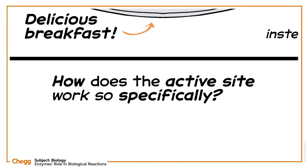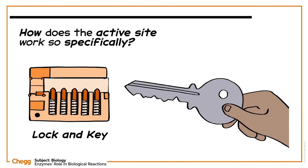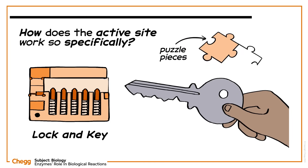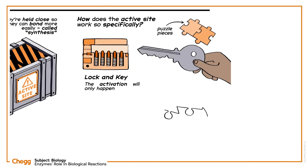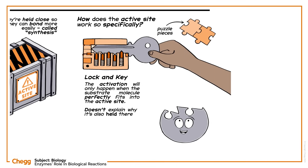Originally, scientists came up with a model called the lock and key model for how the active site works. The idea is that, just like two puzzle pieces, the activation will only happen when the substrate molecule perfectly fits into the active site. But this doesn't fully explain why they're so specific — the substrate structure being the same shape as the active site doesn't explain why it's also held there. For example, if you put a key in a lock, the key can also fall out or be easily removed, but this doesn't happen with enzymes.